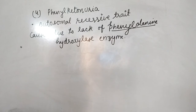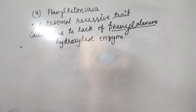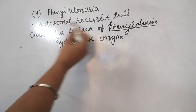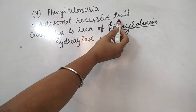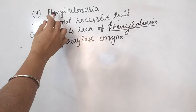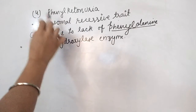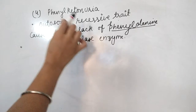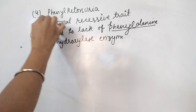Hello students. The next autosomal disorder is Phenylketonuria. It is also an autosomal recessive trait. It is an inborn error of metabolism.